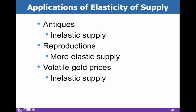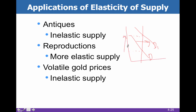Elasticity of supply has real-world implications. Take antiques — the Willem de Kooning painting we discussed is so valuable partly because of the pure inelasticity of supply. The artist has passed away, he only made one like it, there's no hope of creating another — perfectly inelastic supply. So when demand increases and one person is willing to pay the most, that price just drives up and up.